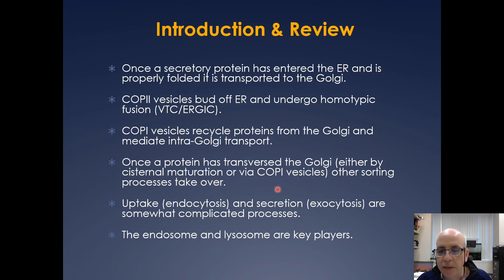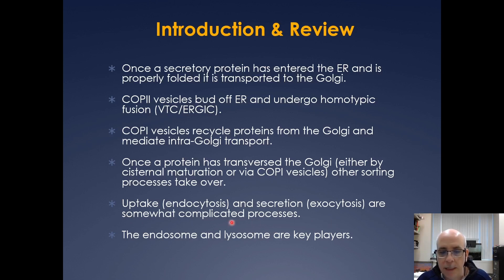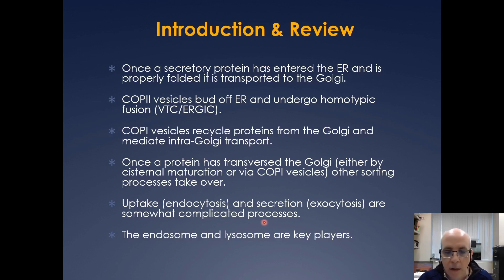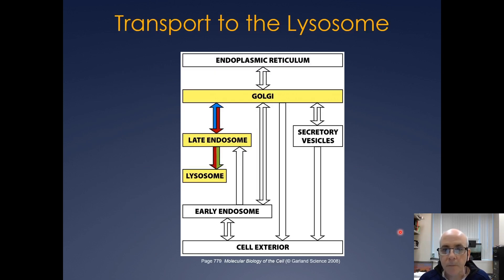Once a protein has gotten to the Golgi, other sorting processes take over. Today we're also going to look at endocytosis and secretion — what happens in the later stages of the secretory pathway. It can get complicated because it's a fuzzy process. What you need to know is that the endosome and the lysosome are key players. We'll look at transport from the Golgi to the late endosome to the lysosome, and also how things go from the cell exterior to the late endosome and then to the lysosome.